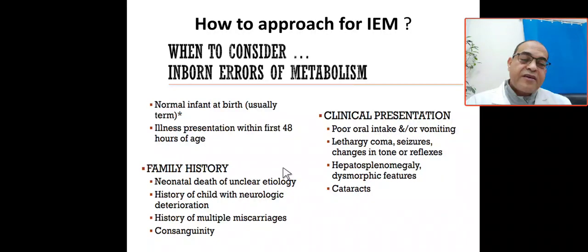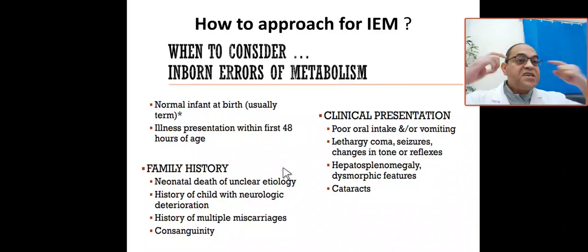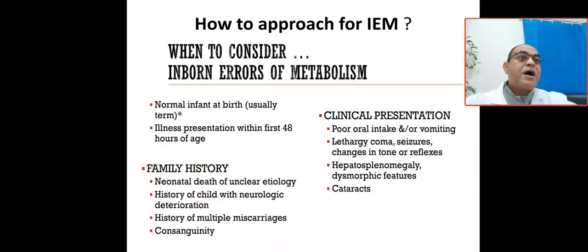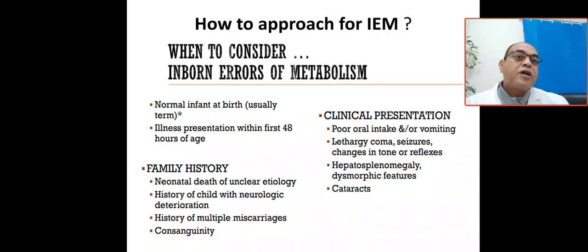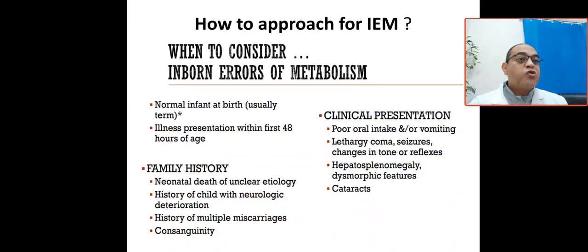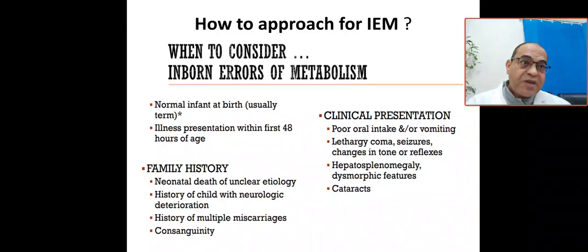Clinical presentations of inborn error of metabolism can involve CNS symptoms: confusion, convulsions, coma, and seizures — as in our case with altered conscious level. Cardiac symptoms may include cardiomyopathy. GI symptoms include excessive vomiting. Other presentations include lethargy, coma, seizure, change in tone, hypotonia, hepatosplenomegaly, dysmorphic features as in peroxisomal disorders, cataract as in galactosemia, and associated E. coli or gram-negative sepsis with galactosemia. Galactosemia can be detected by non-glucose reducing substance in the urine.